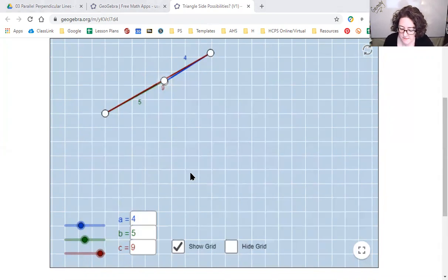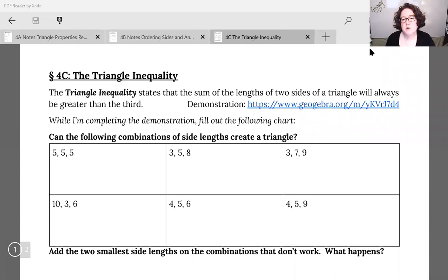Let's think about our results. 5, 5, 5, that one worked. 3, 5, 8 didn't work. 3, 7, 9, that one worked. 10, 3, and 6, not so much. 4, 5, and 6, that one worked. But our last one, 4, 5, and 9 didn't work.